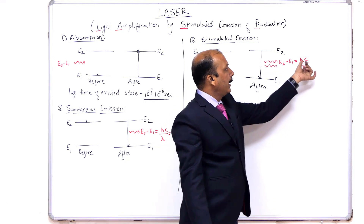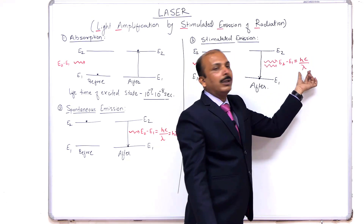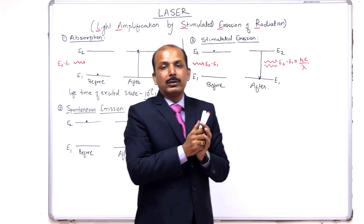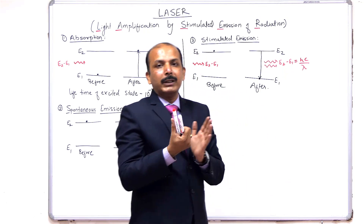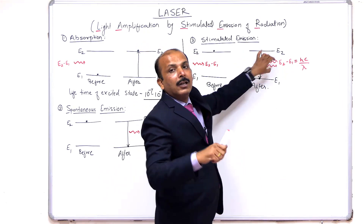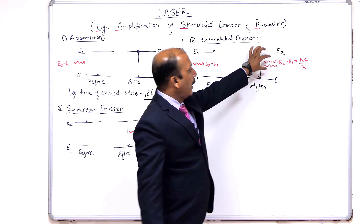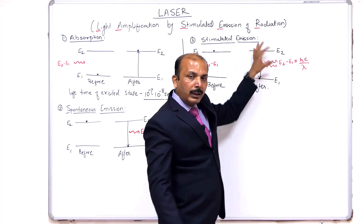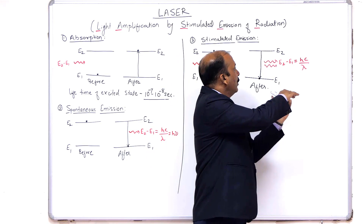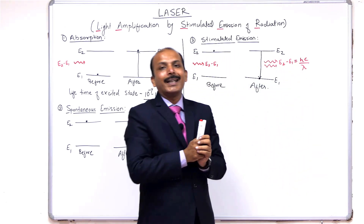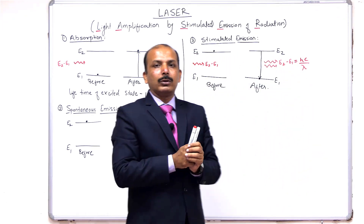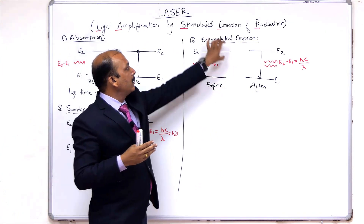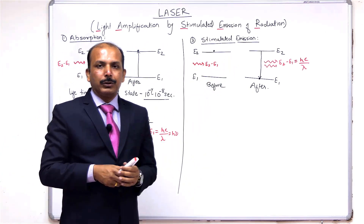Since energy is the same for both photons and H and C are constants, lambda will be the same for both — meaning the source is more monochromatic. As the photons are emitted at the same moment and move in one direction, they give a perfectly coherent source. So all four properties we discussed — directionality, intensity, monochromaticity, and coherence — can be satisfied with stimulated emission.